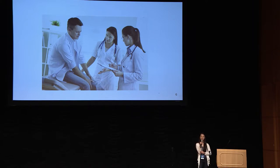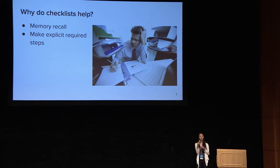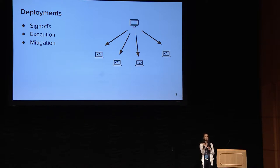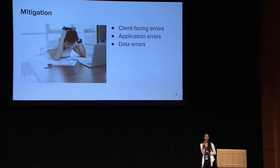So, how can we apply this in the software industry? Checklists help with memory recall and being explicit about the required steps. These are things we want to use in deployments — checks like stakeholder sign-offs, testing, execution of the task during deployment itself, and verifications afterward. And if something goes wrong, it's always less stressful if you've already planned out the steps to handle the situation, instead of trying to figure it out on the fly when you're slammed with errors.